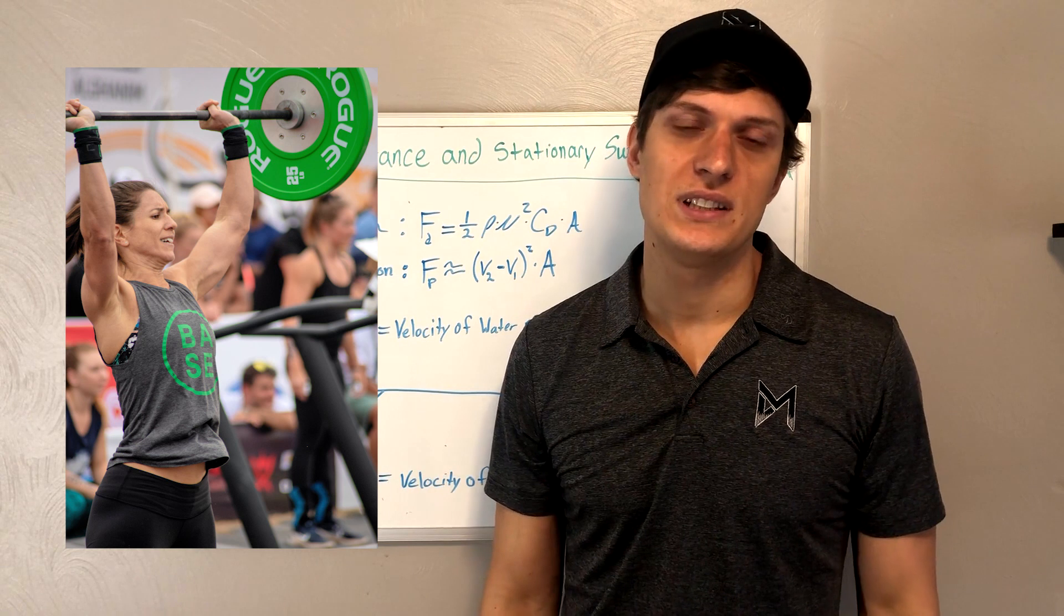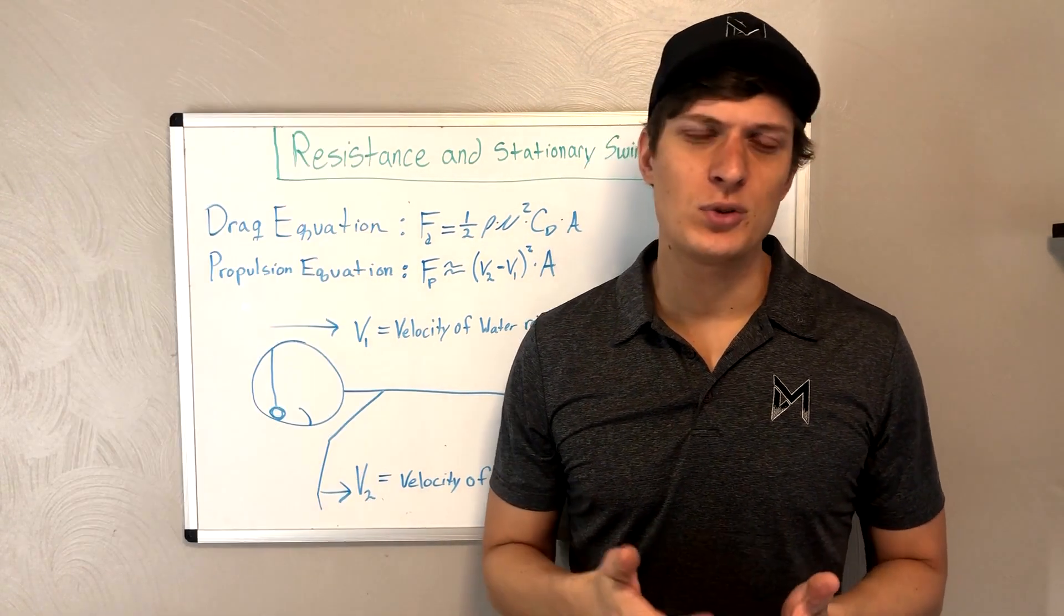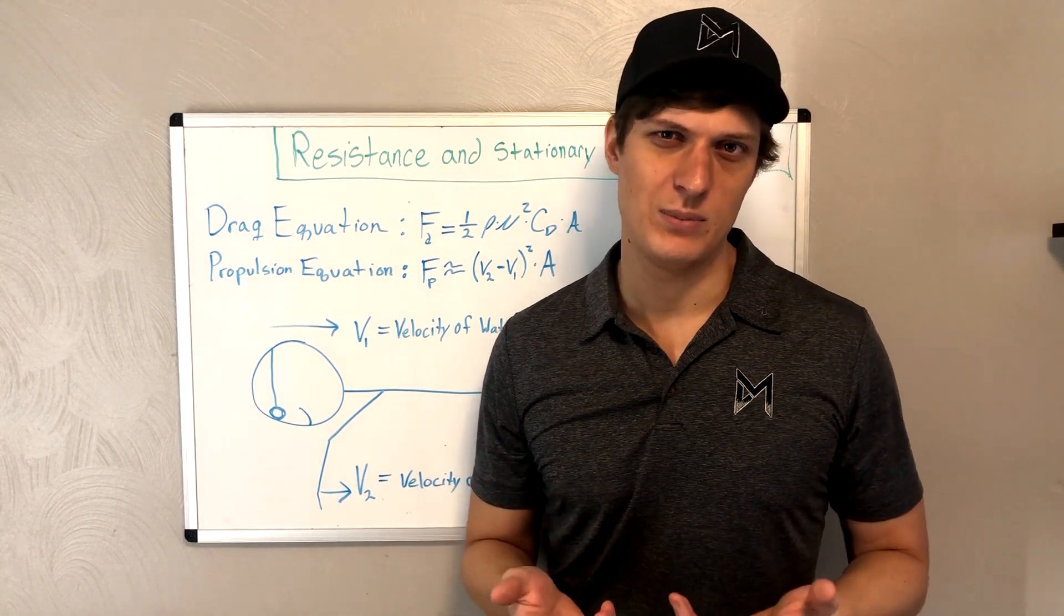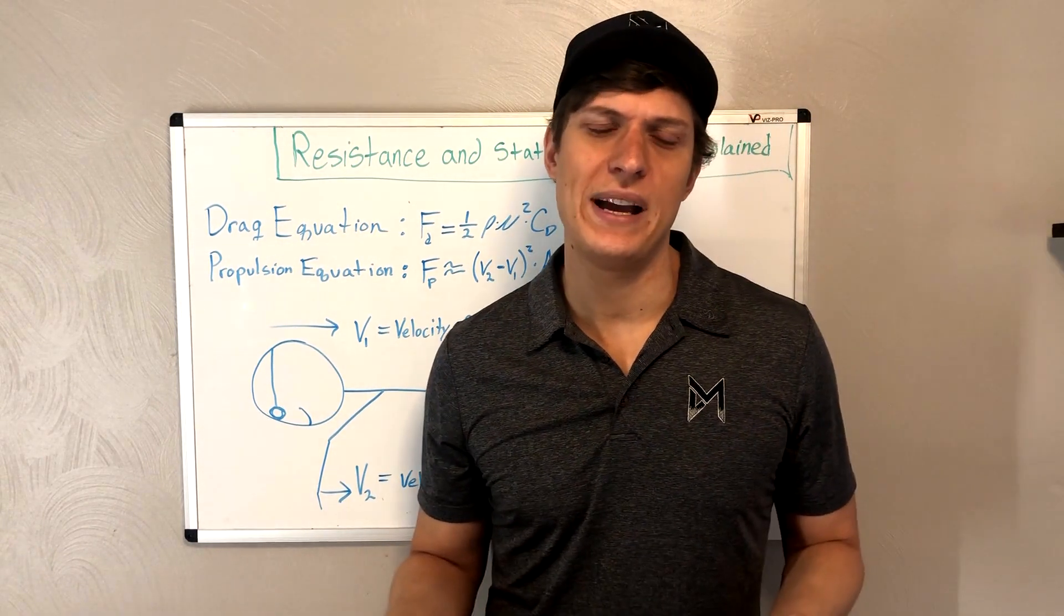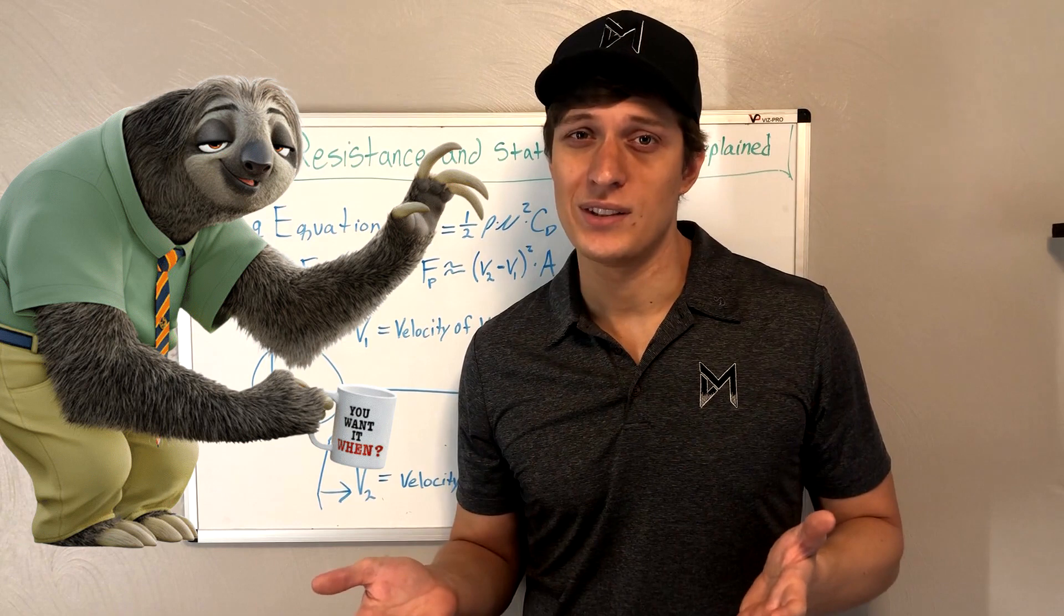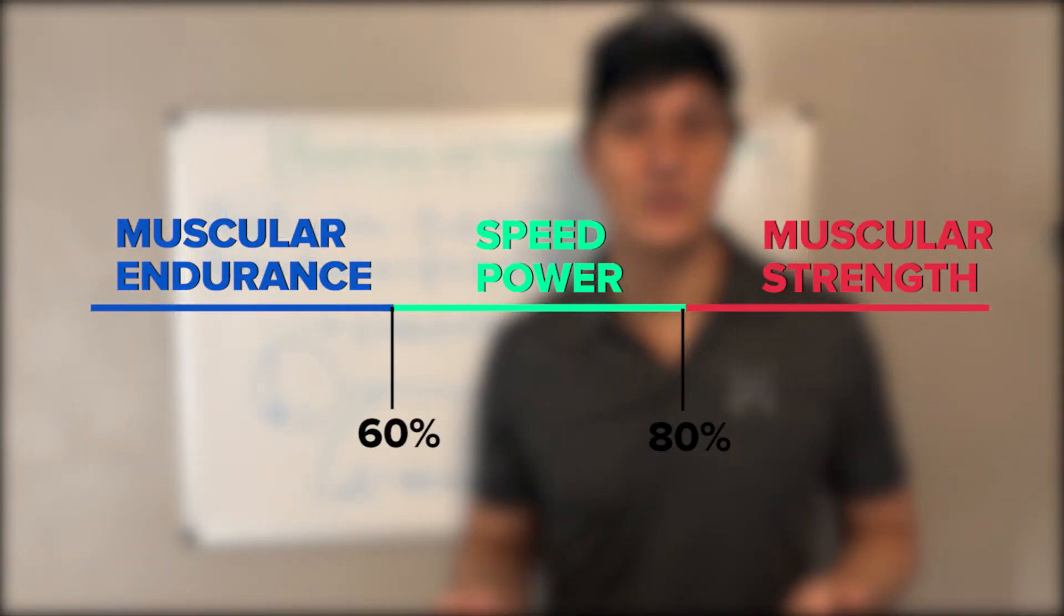Typically, speed and power sports need to train in the 60 to 80% of their max ranges. So if we're training higher than this 80%, we start to train strength rather than speed and power. And this is why you'll see guys who have a 600 pound back squat, but they can't jump six inches off the ground, or they're slower than the sloth from Zootopia. Ultimately, training over 80% can make you slow.